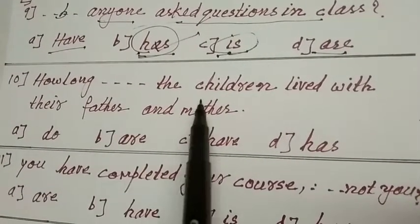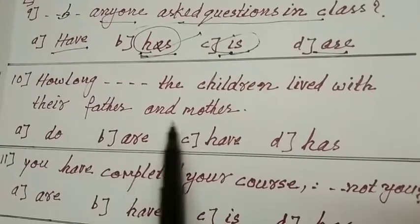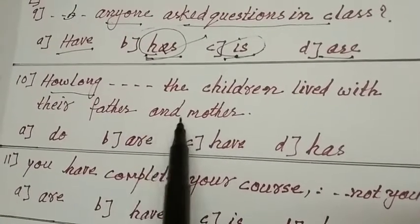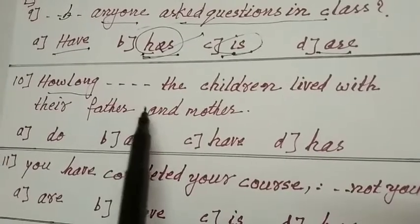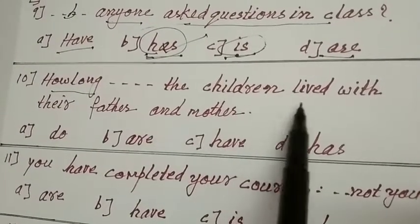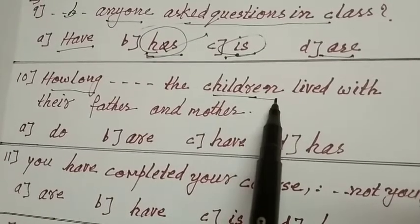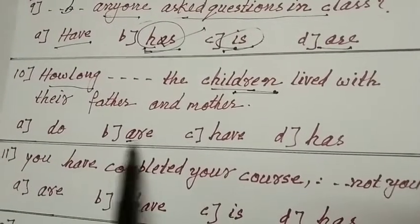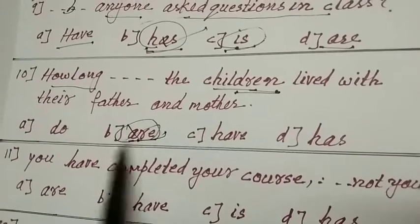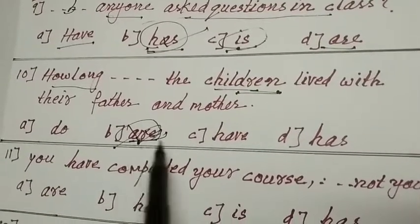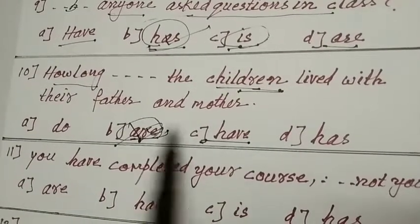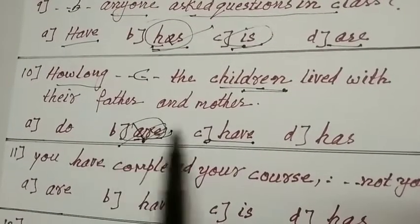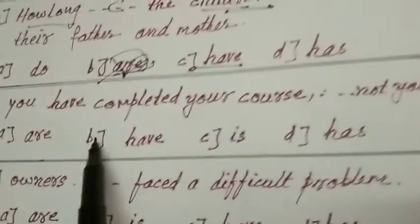How long dash the children lived with their father and mother? How long? The children lived with, children more than one, living with them. More than one. How long are does not come friends. Are is wrong. How long have the children lived with their father and mother? C is your answer.